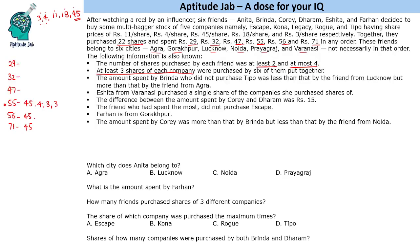Now for 55: 11 can be taken directly as 11, or split as 18+4+4+4+3. For 71: 45 plus 26, and 26 can be written as 11+11+4, or alternatively as 18+4+4. We will check both possibilities.